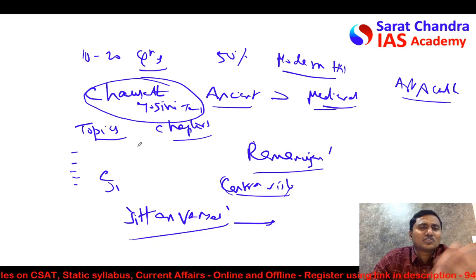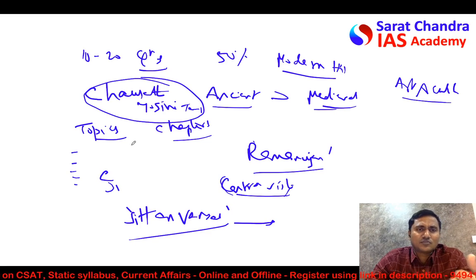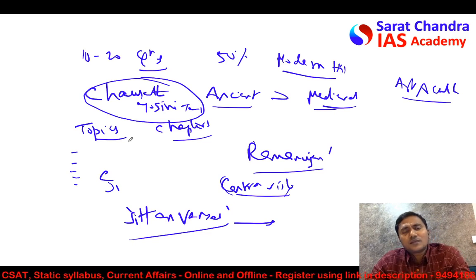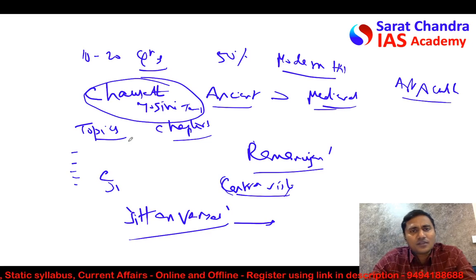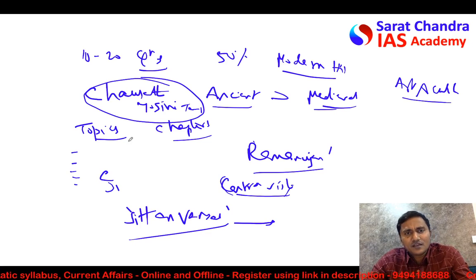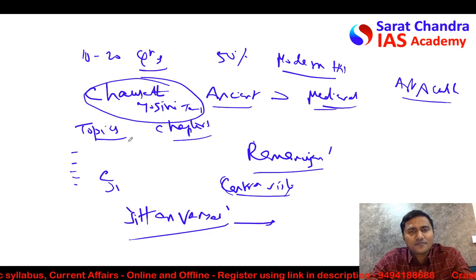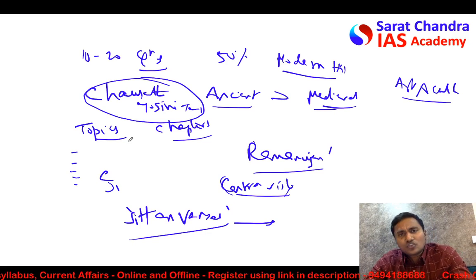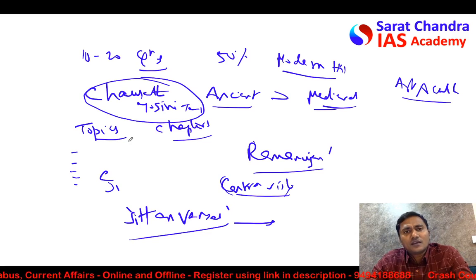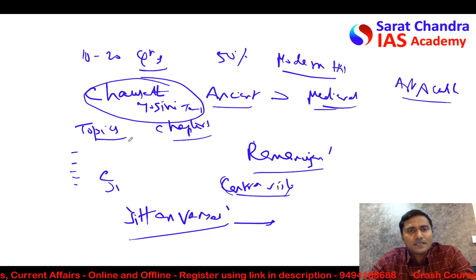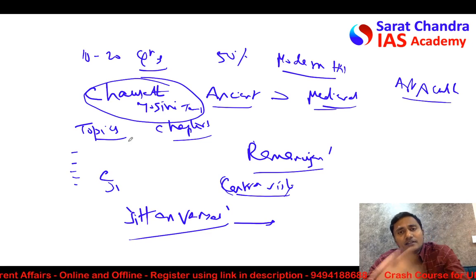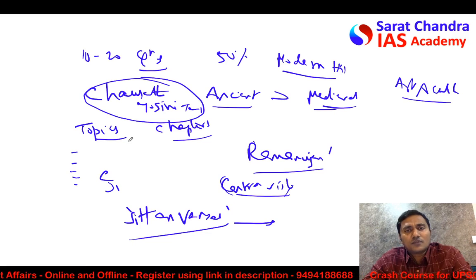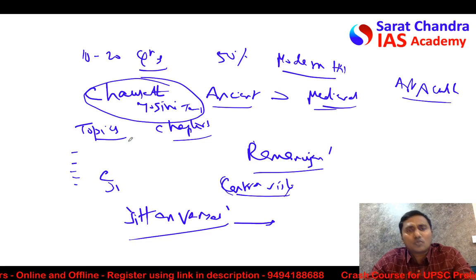In Polity, if any governor issue happens in Andhra Pradesh or Karnataka, there may be a question about the discretionary powers of the governor. If there is disqualification of any MP due to two years of imprisonment, there may be a question about MP disqualification. Similarly in history, if it is the 50th or 100th anniversary of a certain event from the Indian independence movement or medieval history, there may be a question on that.